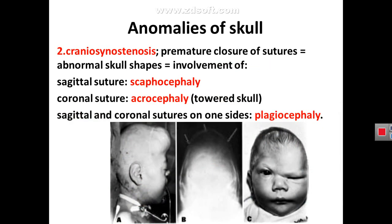The other abnormality is contrary to an opening — it is premature closure of the sutures of the skull during intrauterine life. This may result in an abnormal shape of the skull. Premature ossification of the sagittal suture makes the head boat-shaped, called scaphocephaly. Ossification of the coronal suture makes the head raise upward, called acrocephaly or towered skull. One-sided premature closure of the sagittal and coronal sutures results in plagiocephaly. Either there is an opening — cranioschisis — or closure — craniosynostosis.